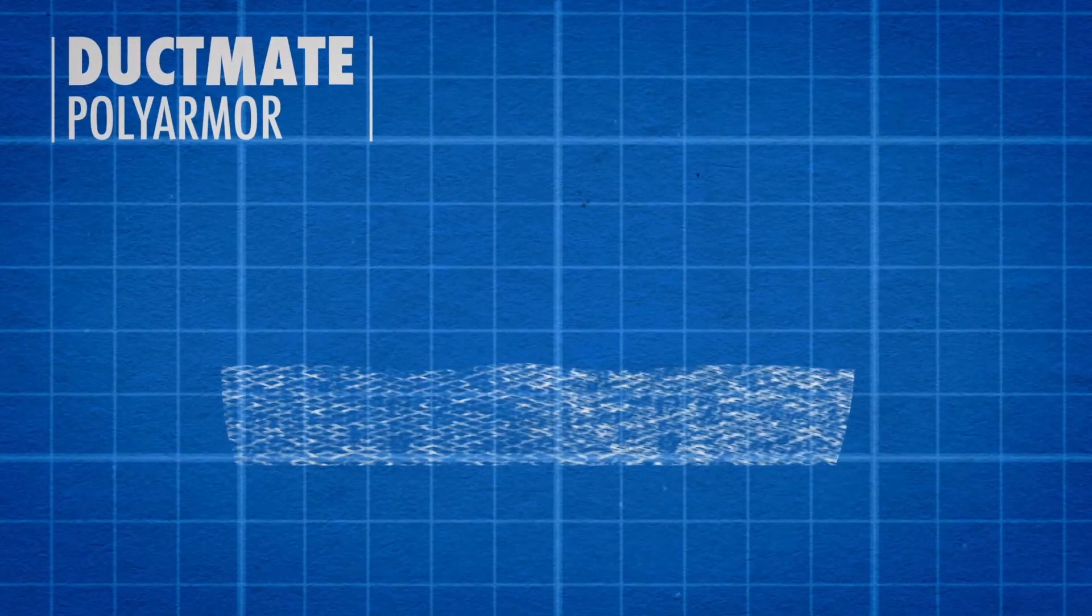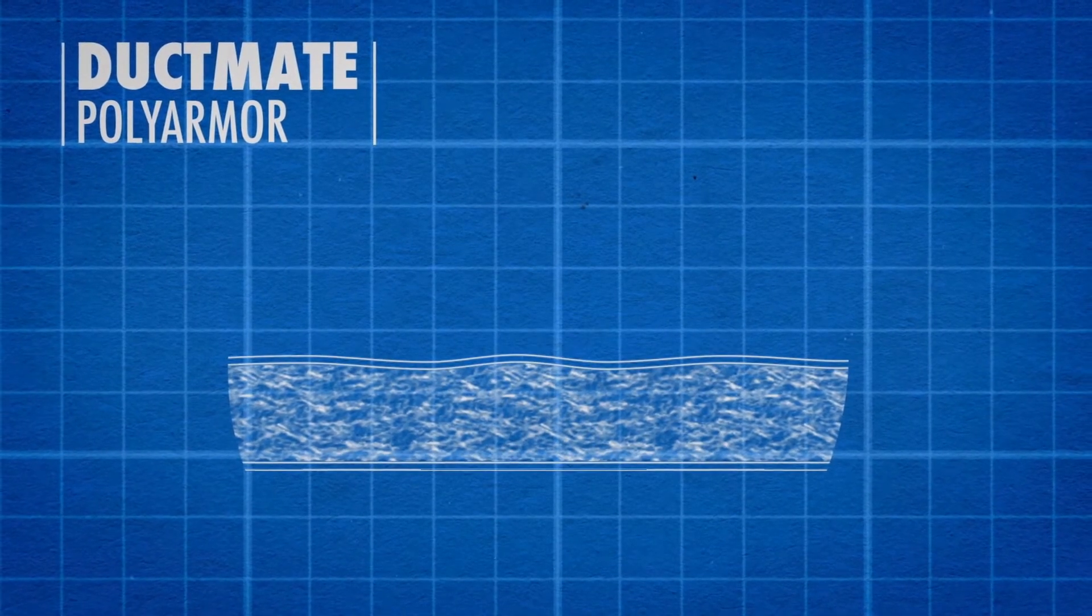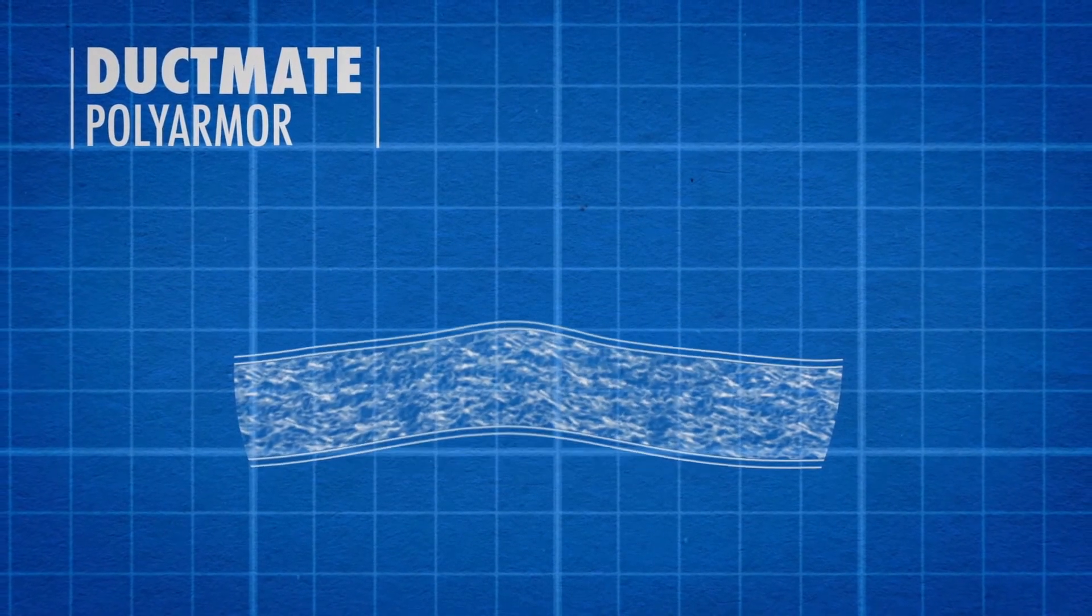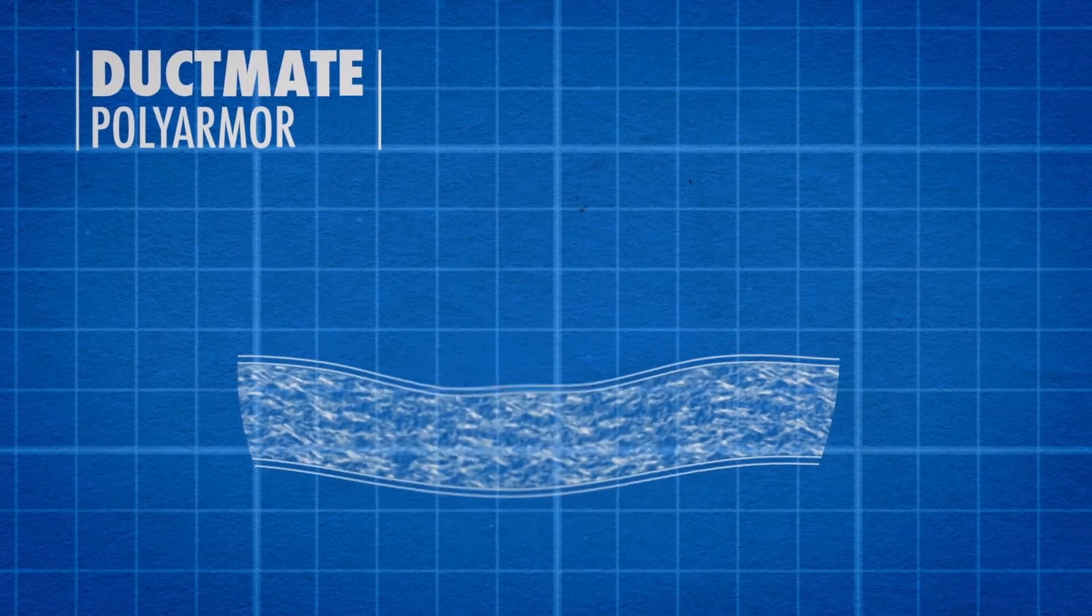PolyArmor's durable material is webbed into a thermal blanket and then bonded with an FSK facing, making it resistant to damage during system installation and operation.